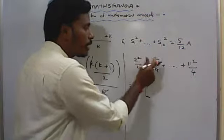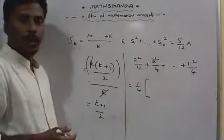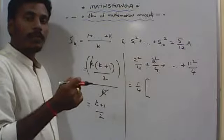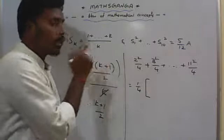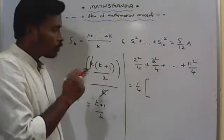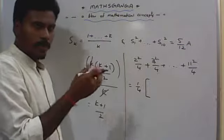You just found out that 1/4, then we have that 2² + 3² + ... + 11². Sum of the squares of the first 11 natural numbers except 1². So we need to add that 1 and subtract that 1.